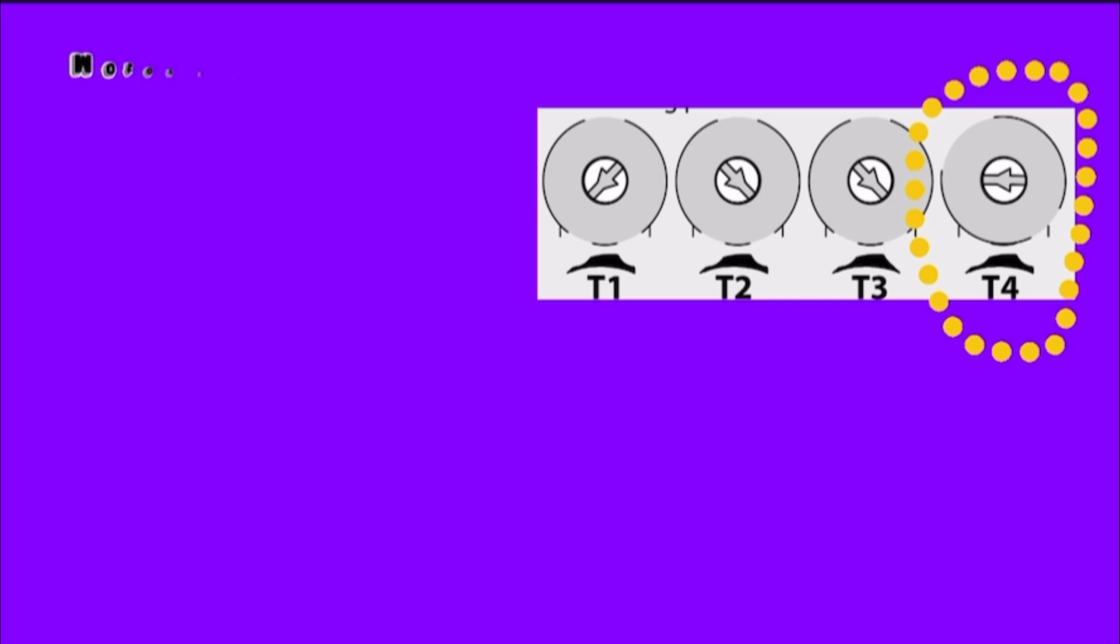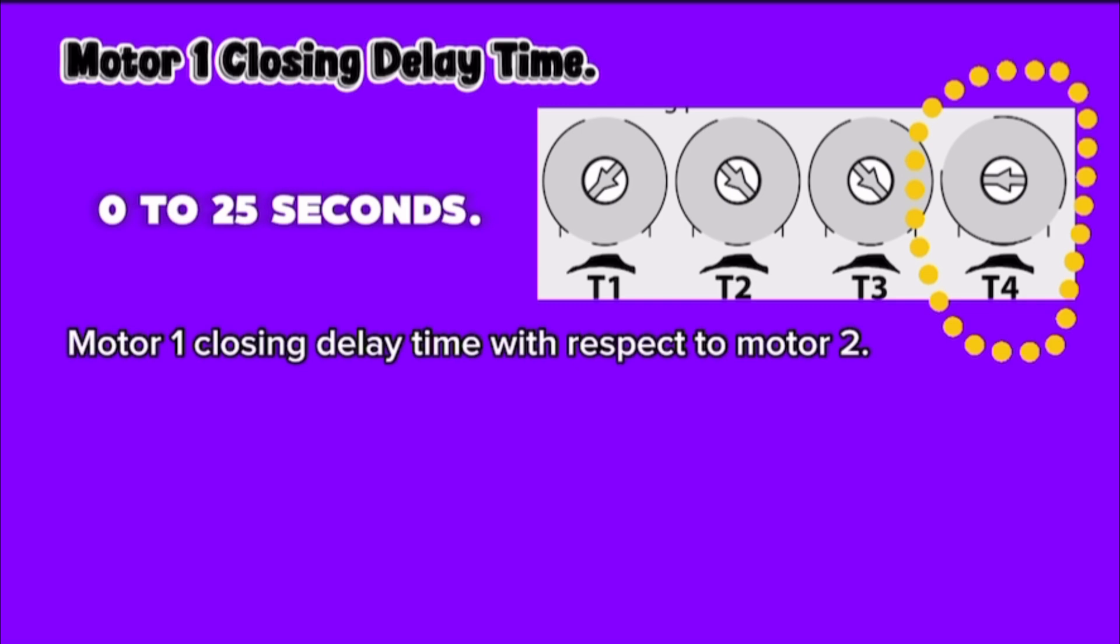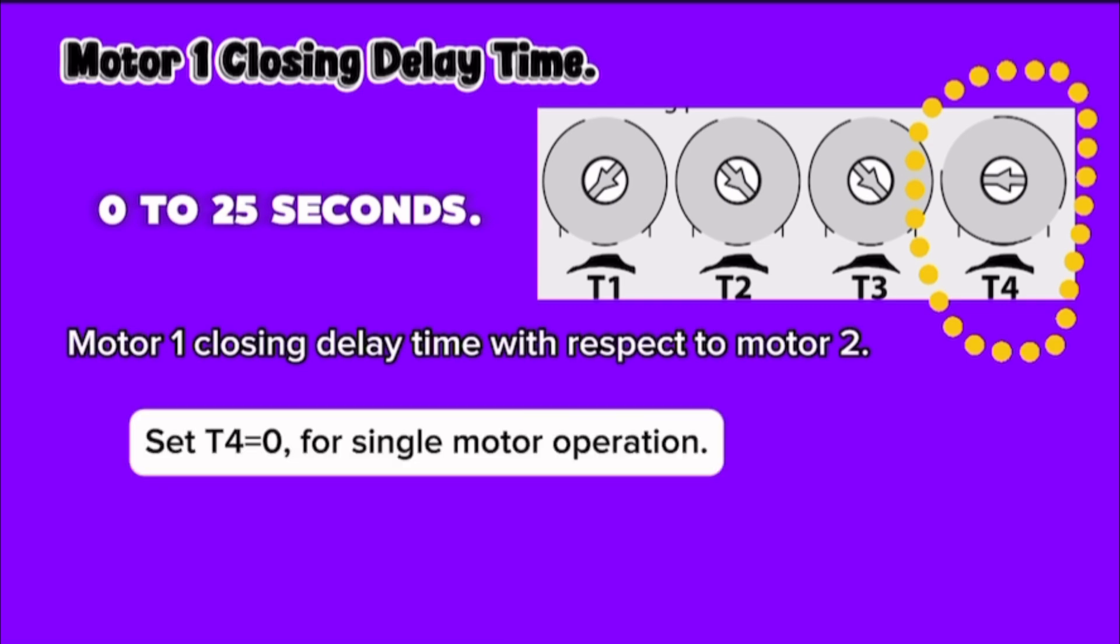T4, motor one closing delay time. The time is in seconds, zero to 25 seconds. Motor one closing delay time with respect to motor two. Set T4 to zero for single motor operation.